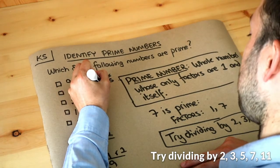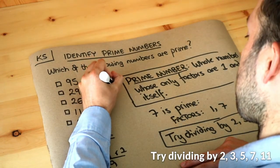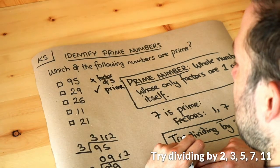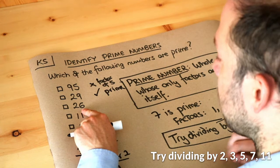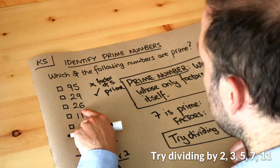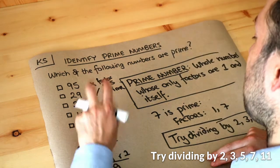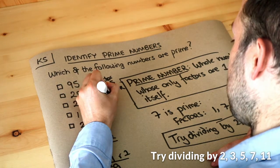What about 26? Well, 26 is an even number, which means it has a factor of two. Because it has factors other than one and itself, it means it's not prime.